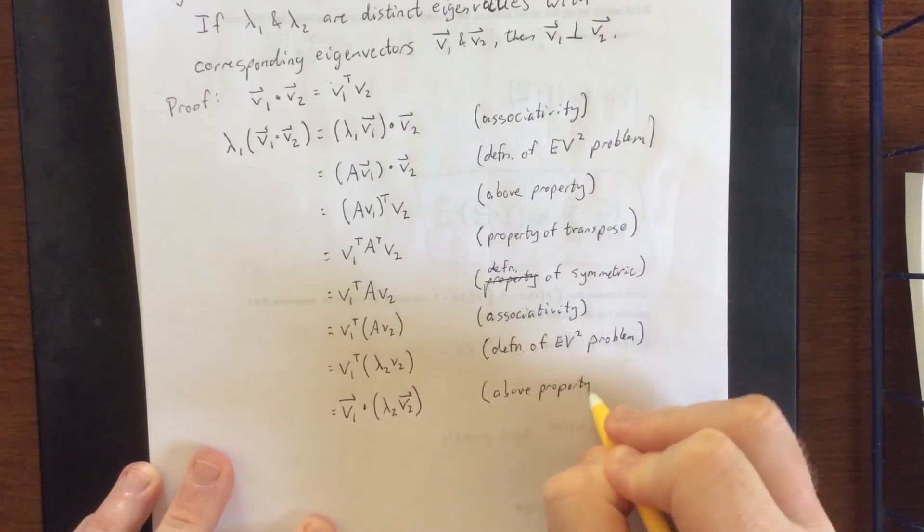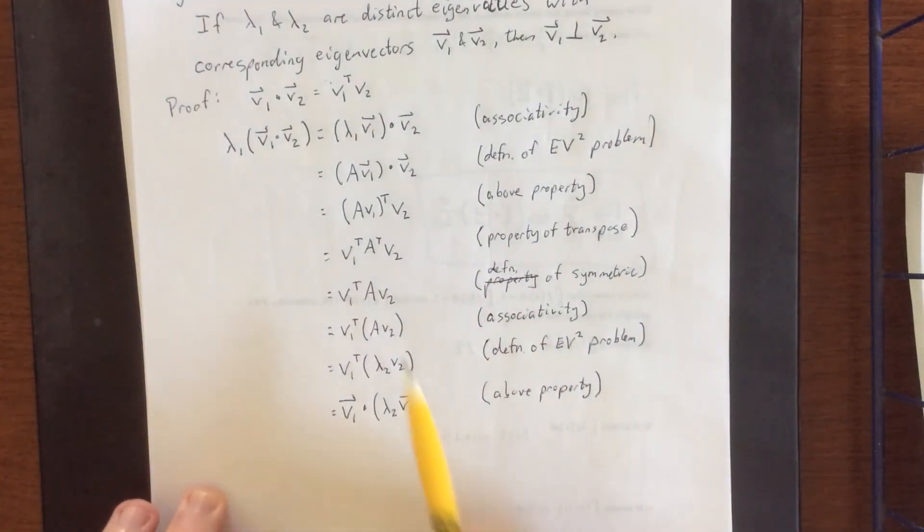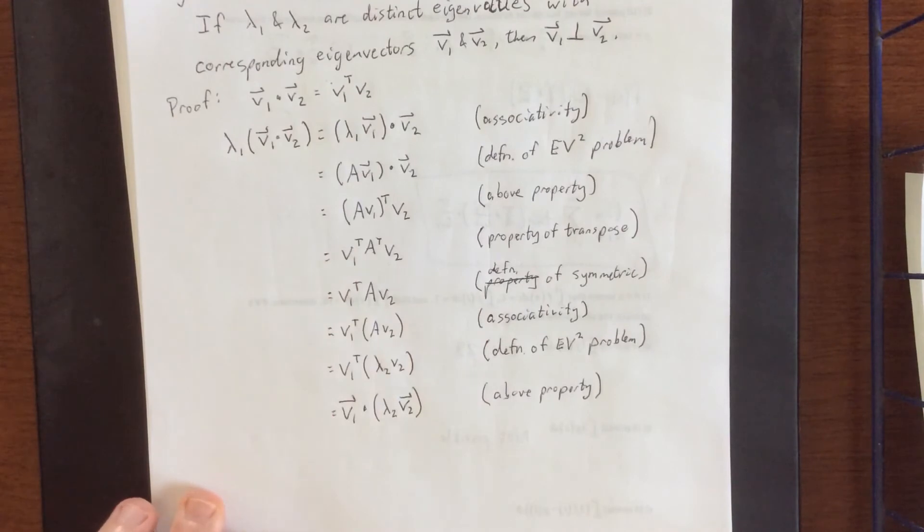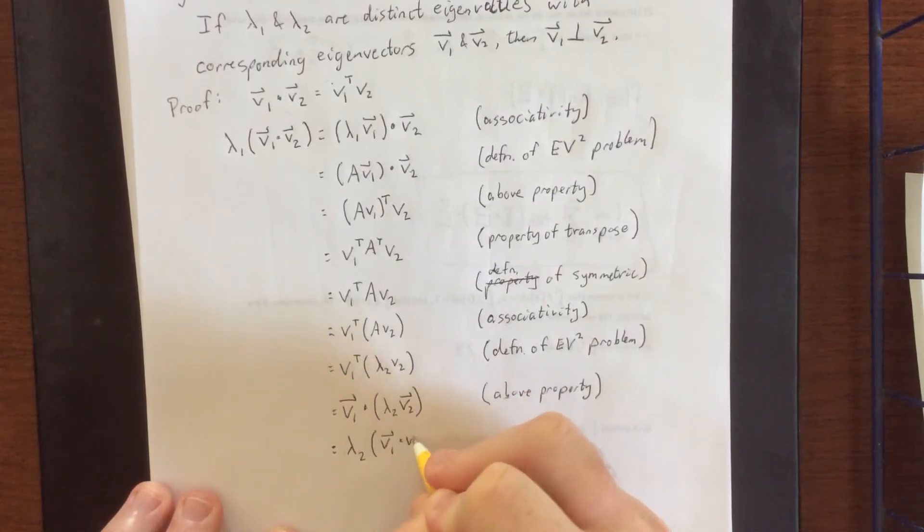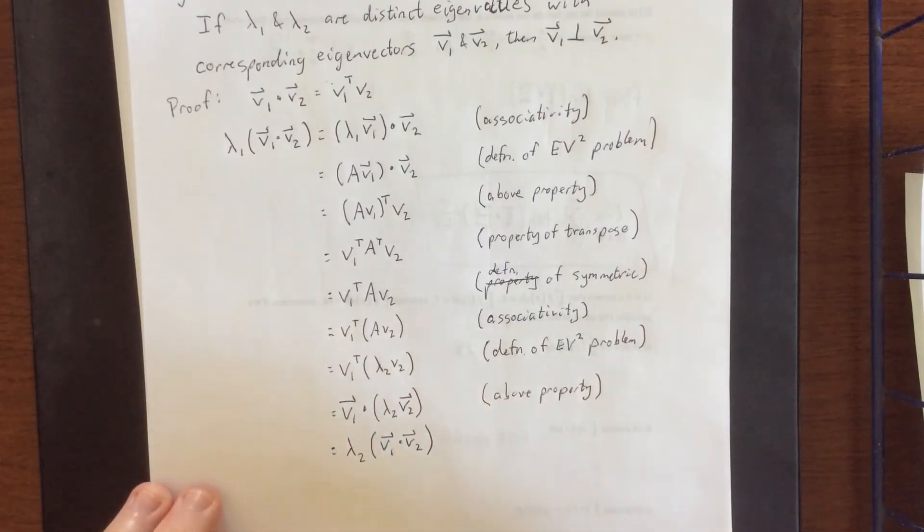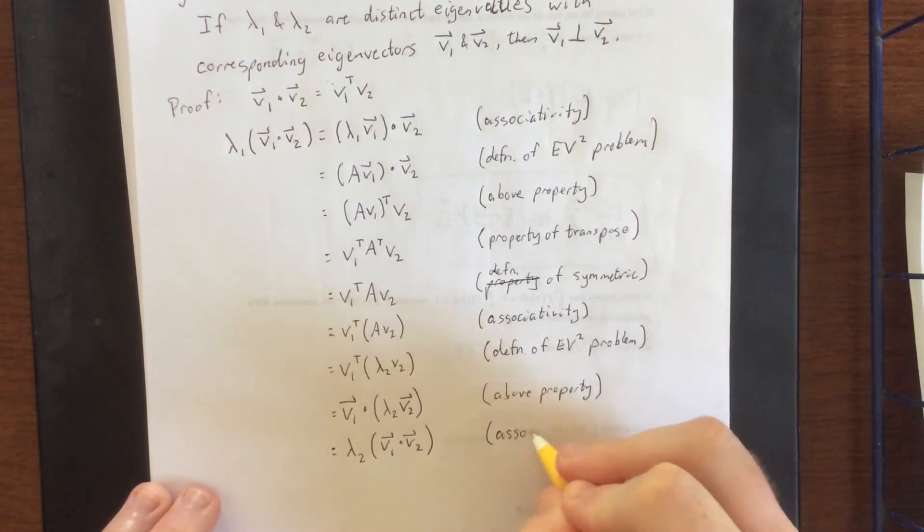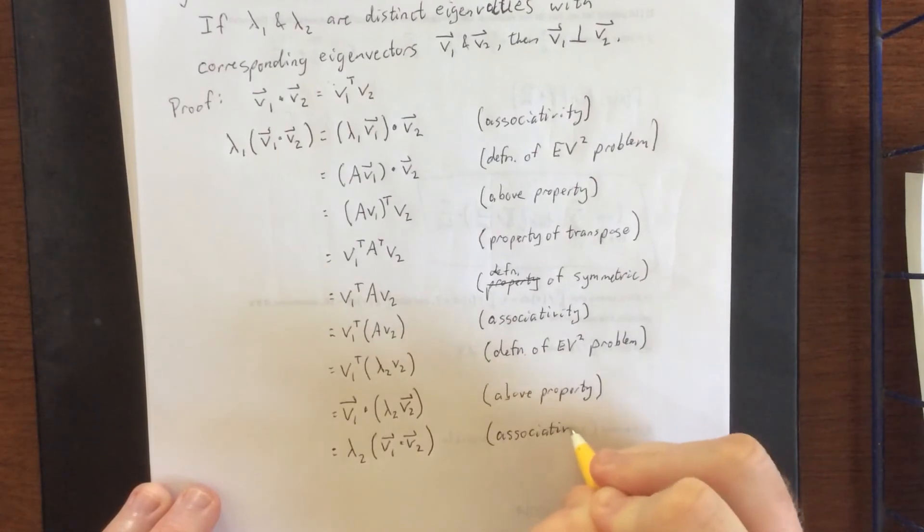Now at this point we're basically kind of undoing all of the things that we did, having flipped A transpose back to A. And finally, through the associativity of scalar multiplication with a dot product, we can say that that is equal to lambda 2 times V1 dotted with V2. And again, that is associativity.